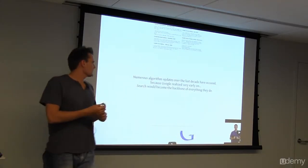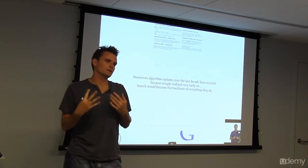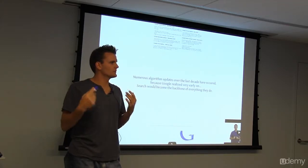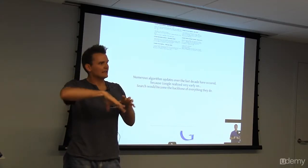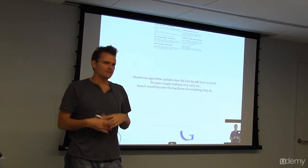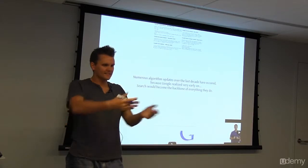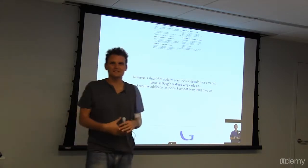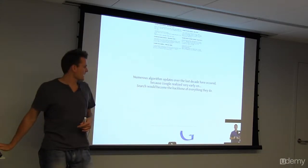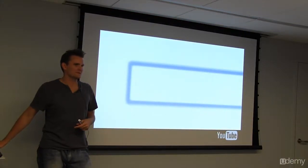So numerous algorithm updates over the last decade have occurred because Google realized very early on that search would become the backbone of everything they do. Google does a lot now. Google Maps and Google Docs and they're in a lot of different areas. Google Drive just came out to go head-to-head with Dropbox. And they released those augmented reality glasses. I mean, they do everything. But search is the backbone of everything that they do. You guys remember this commercial?